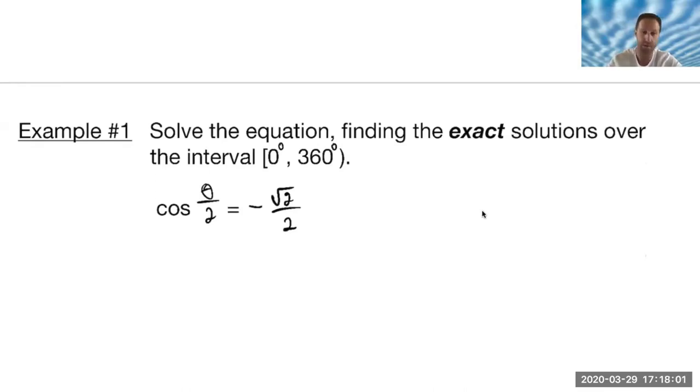Let's say we were asked to solve this equation. Again, it's asking for the exact solutions, meaning they're going to give us something we don't need a calculator for. In this case, it's using theta, and therefore we're going to use 0 to 360, including 0 but excluding 360 because they're the same point.